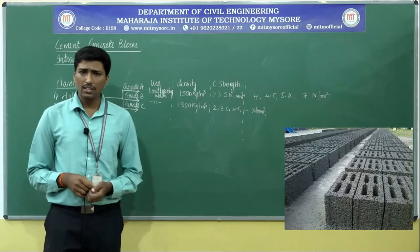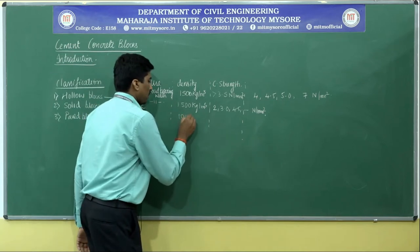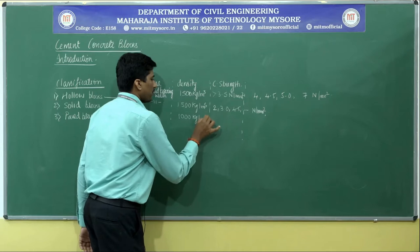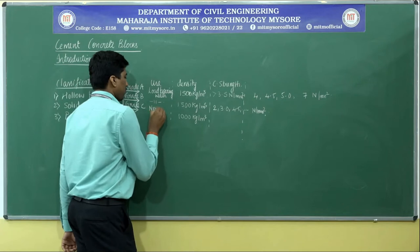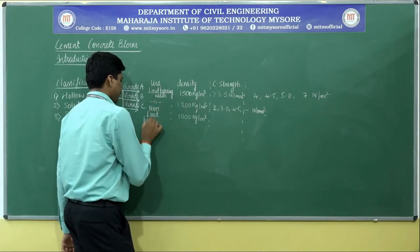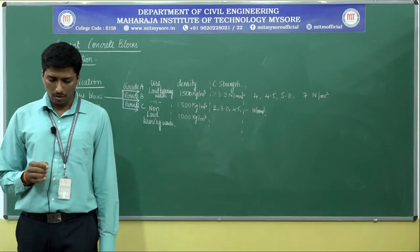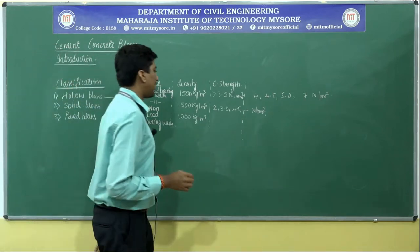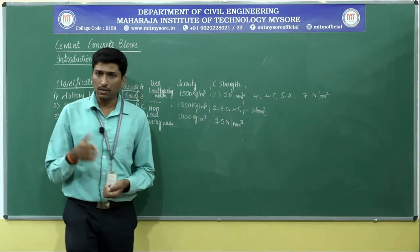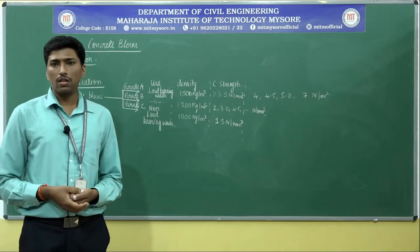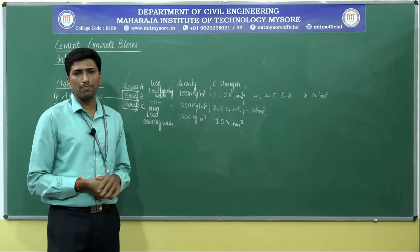Grade C hollow blocks have a density of about 1000 kg per cubic meter and are mainly used for non-load bearing walls. For non-load bearing applications, the compressive strength is less than 3.5 Newton per mm², starting from 1.5 Newton per mm². These are particularly utilized for external non-load bearing wall construction.